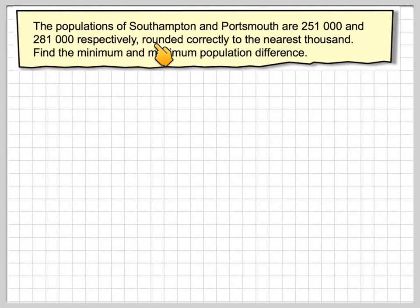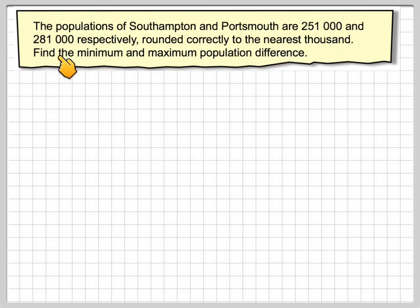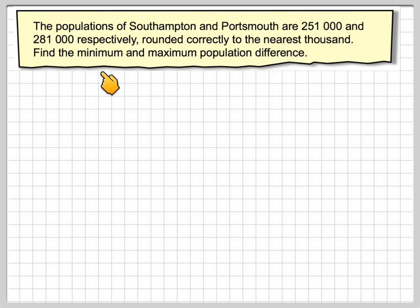The populations of Southampton and Portsmouth are 251,000 and 281,000 respectively, rounded correctly to the nearest thousand. Find the minimum and the maximum population difference.